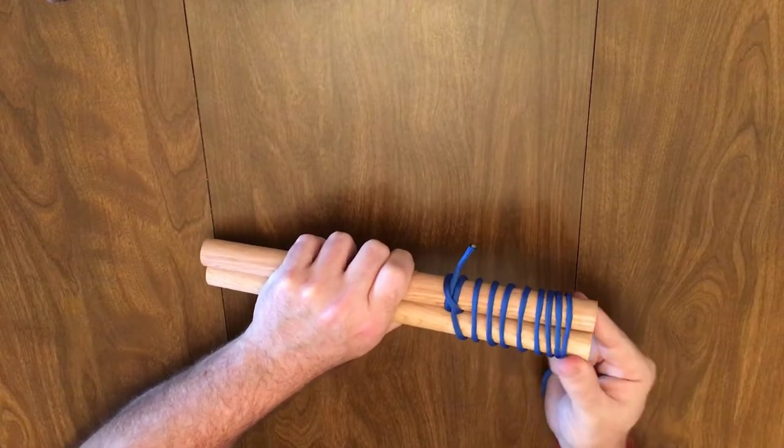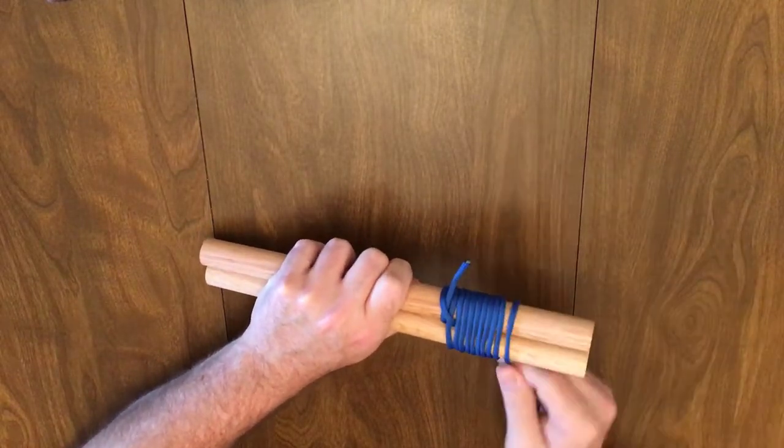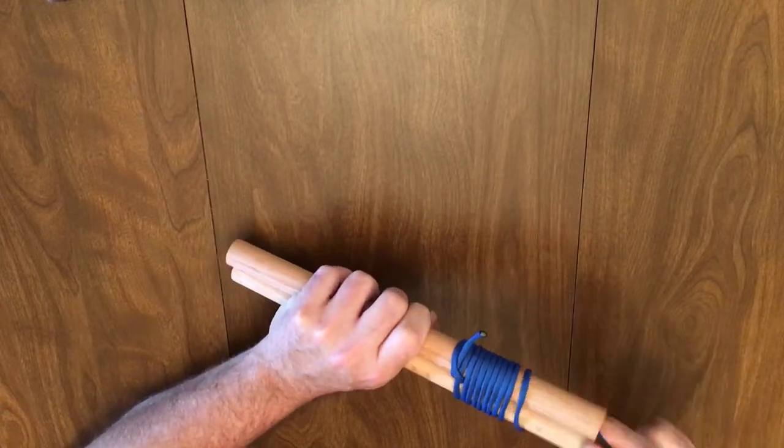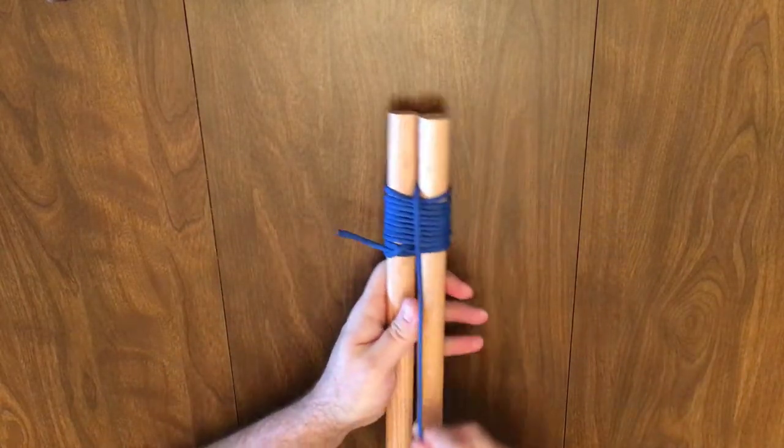These should be just loose enough to allow our frapping turns to pass between the two poles. Make two or more frapping turns.